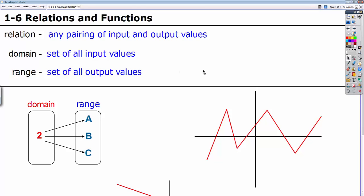You're used to calling domain X and range Y. That's because X is traditionally an input value and Y is traditionally an output value. So we have some examples down here of some relations. This one shows your domain of 2 going to your range of A and then B and then C. So if you were to write these as points that would be 2A, 2B, and 2C.